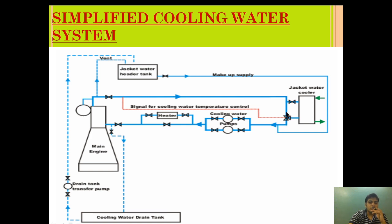While returning back to the cooler, a three-way valve is provided which decides the amount of cooling required for the jacket water cooler. In the three-way valve, it mixes the cooled jacket water and the heated jacket water such that the inlet temperature of the jacket water is maintained at 68 to 70 degrees Celsius. The amount of mixing is controlled by throttling the valve of the water coming out from the jacket and the water coming out from the cooler, by taking the temperature reading from the outlet of the jacket. The inlet temperature is around 68 to 70 degrees Celsius and the outlet temperature is 78 to 82 degrees Celsius.